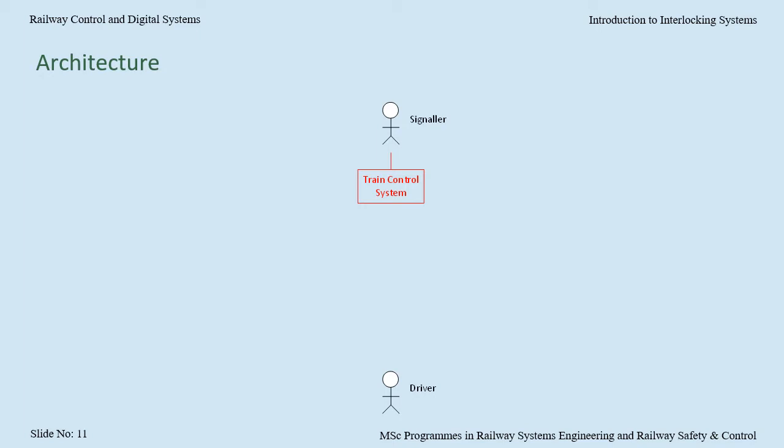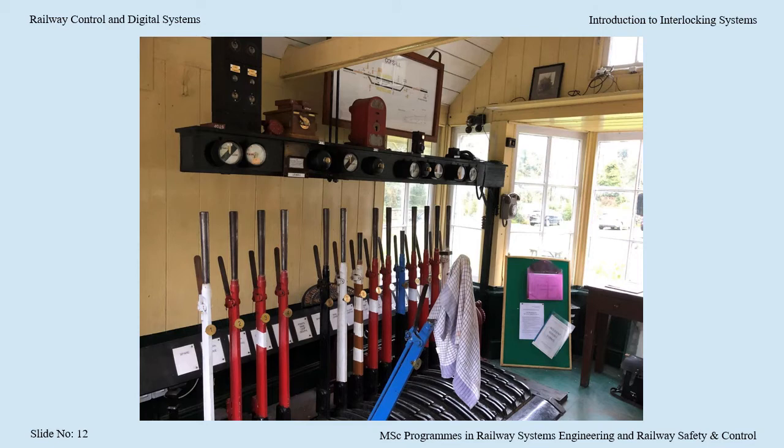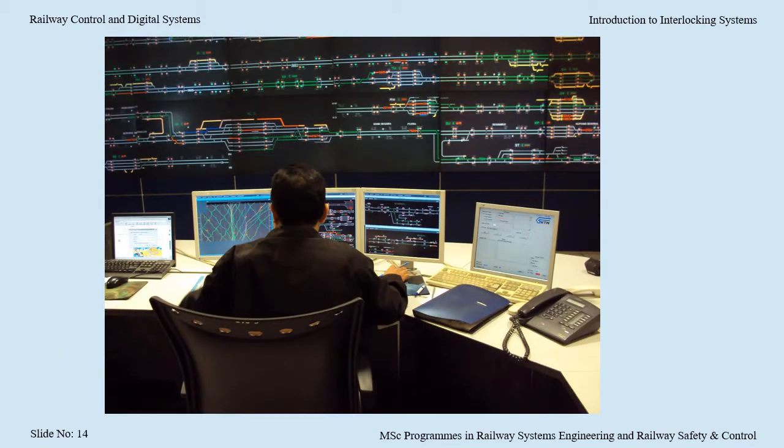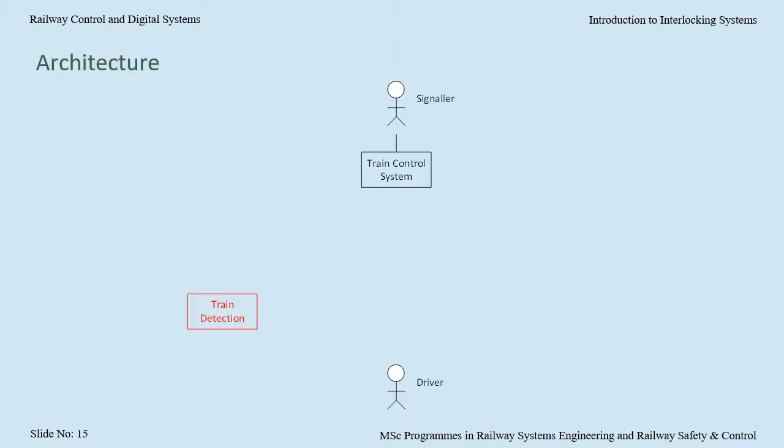The railway control system between the signaller and the driver consists of several subsystems. The signaller will have some type of train control system. This could be a mechanical lever frame, a push button panel, or a VDU-based system. Train detection allows the railway control system to know where the trains are. This could be track circuits, axle counters, or the train itself advising the railway control system where it is.